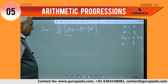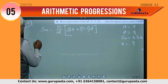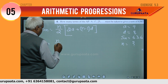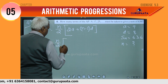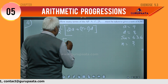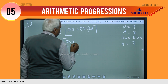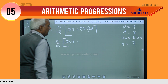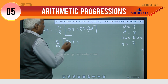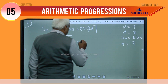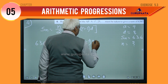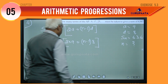What is the value of Sn? Sn is 636, equal to n by 2. We don't know n, we have to find the value. 2A equal to 2 into 9, plus n minus 1 into D, that is 8. This we will simplify.